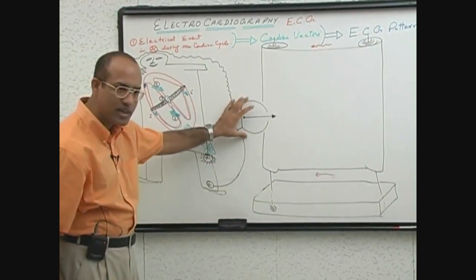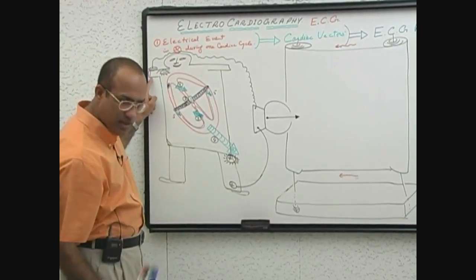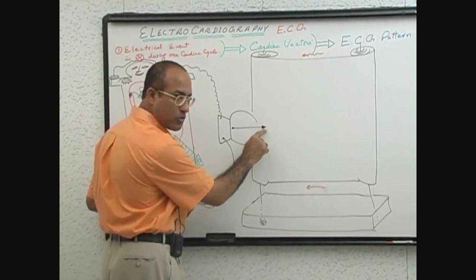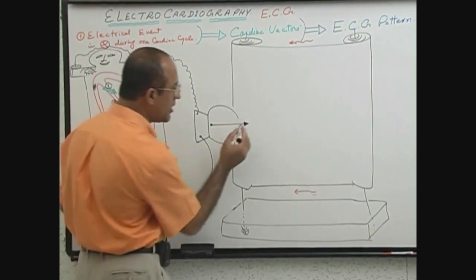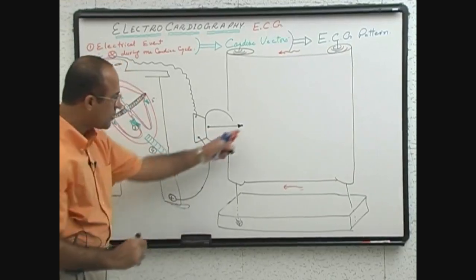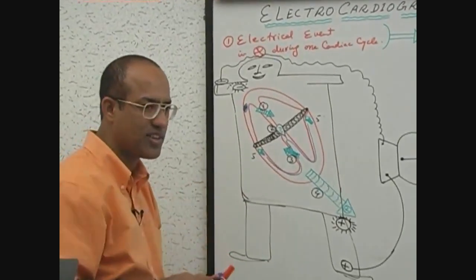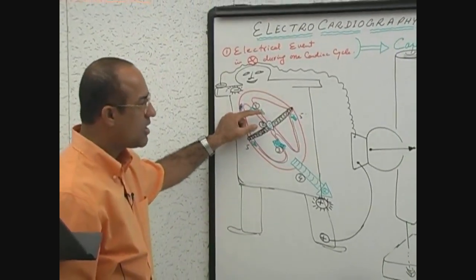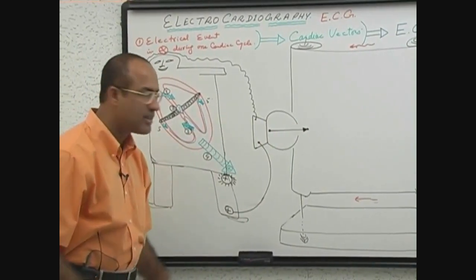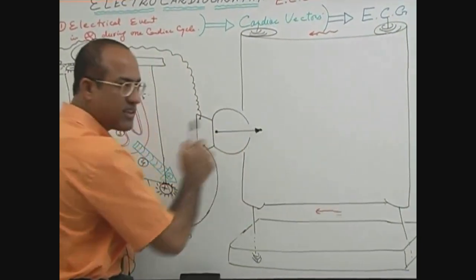We are ready with our ECG machine. This is the galvanometer — a very sensitive one. Positive electrode here, negative electrode on the right upper side of the trunk. We bring this needle out and put some black ink on the needle tip. We switch it on and the paper starts moving under the needle. When there is no electrical activity in the heart, no vectors are produced, the needle remains at a neutral position, and because the paper is moving under the needle, it will make a straight line.